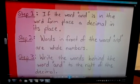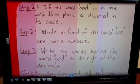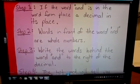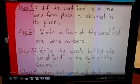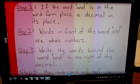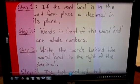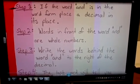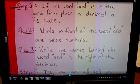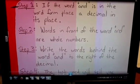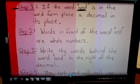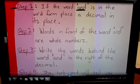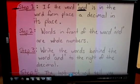We're going to take a quick look first at a step-by-step process that you can follow in order to find your answer in standard form. Let's look at step number one. Step number one simply says that if the word AND is in word form, then we're going to place a decimal in its place. Simply replace that word.